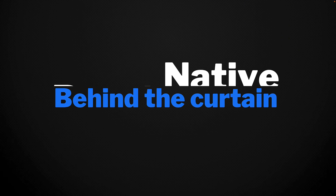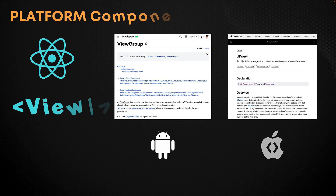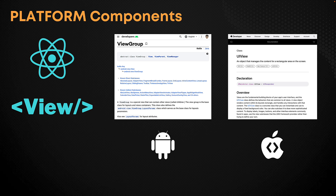To understand how React Native renders our components to the different native platforms, let's take a look at the simple example of rendering the React Native view component to the screen. React Native will take this declaration for the desire of having a view component and then eventually render a platform-specific component.